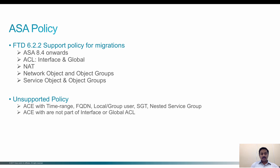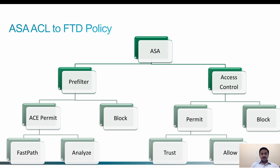The unsupported policies within ASA ACEs are: ACEs which have a time range, FQDN, local username, local group, users and SGT, nested object groups, and ACLs which are not part of interface or global rules — these will not be migrated to FMC.